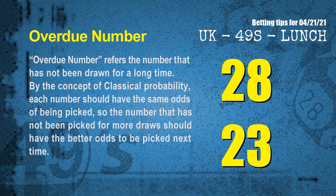The final information for you is overdue numbers. An overdue number refers to a number that has not been drawn for a long time. By the concept of classical probability, the number that has not been picked for more draws should have better odds to be picked next time. After counting thousands of results, the most overdue two numbers are 28 and 23.